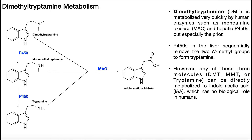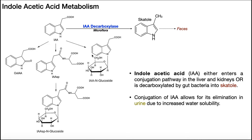The major mode of metabolism is through monoamine oxidase to indole acetic acid. Indole acetic acid itself has two metabolic pathways. One is through gut bacteria — intestinal microflora — which have an enzyme called indole acetic acid decarboxylase that removes the carboxyl group, producing a molecule called skatol. Skatol is eliminated in the feces and is actually the primary source of the smell of feces. This pathway occurs through gut bacteria, not human enzymes.